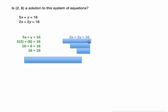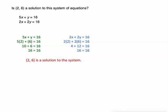Just because it worked in the first one doesn't mean it's a solution to the system. 2x + 2y = 16. Replacing x with 2 and y with 6: 2 times 2 is 4, and 2 times 6 is 12, and 4 plus 12 is 16. So since this point solves both equations, that makes it a solution to the system of equations.